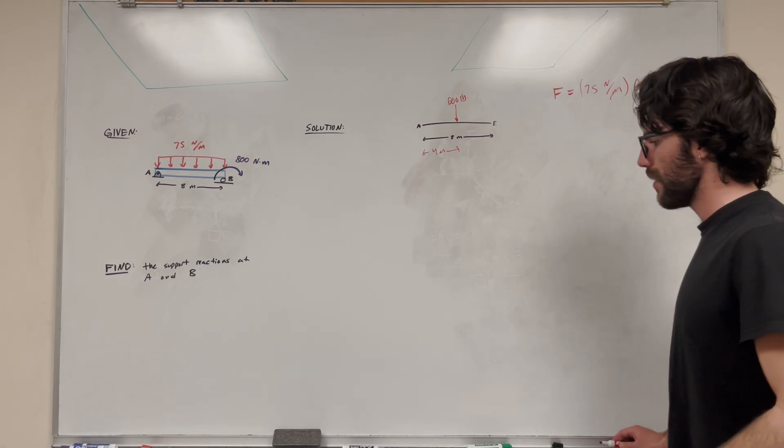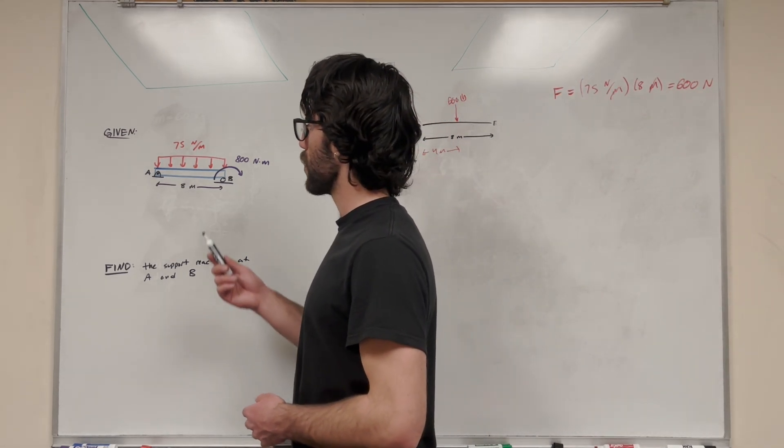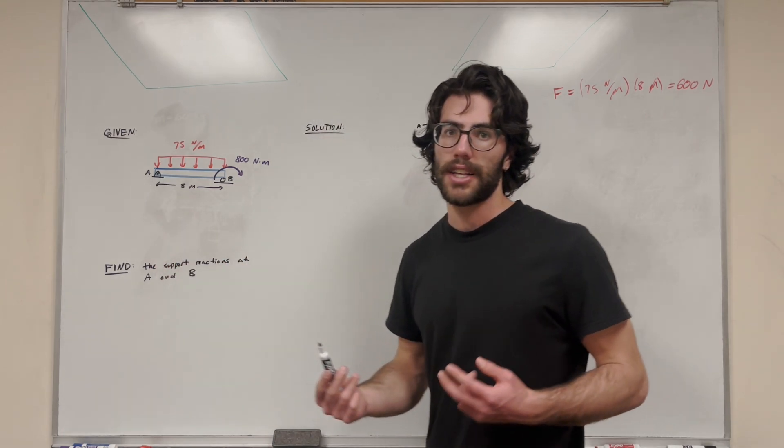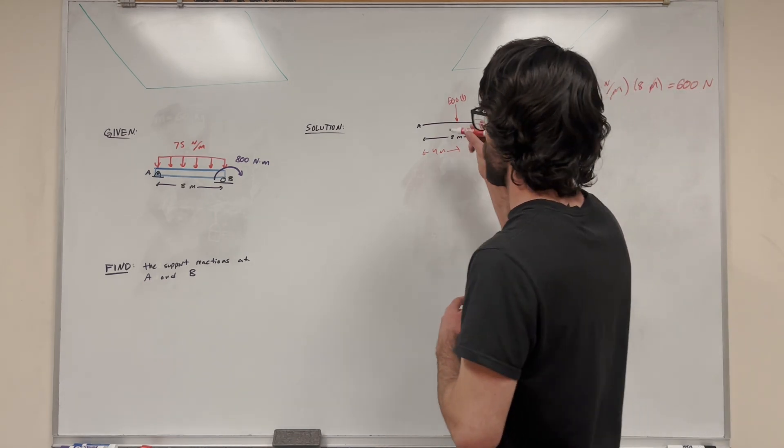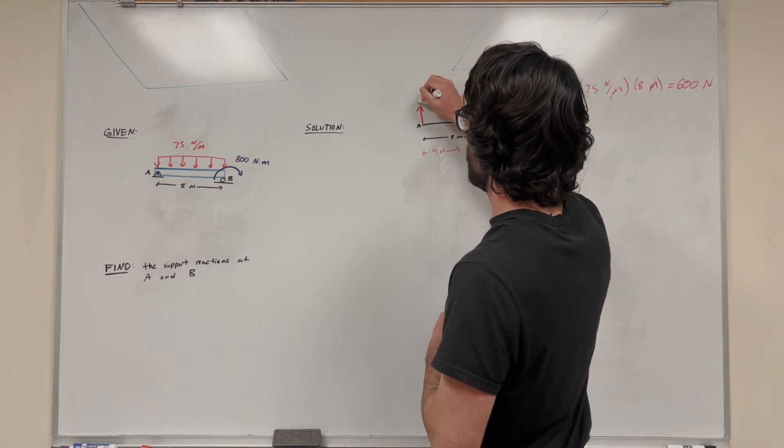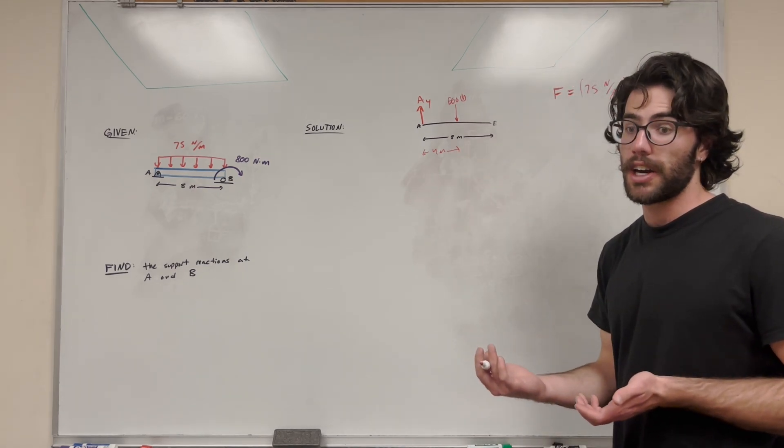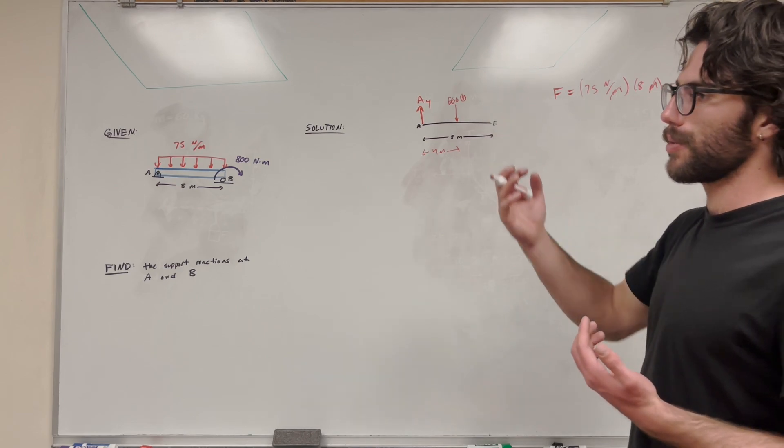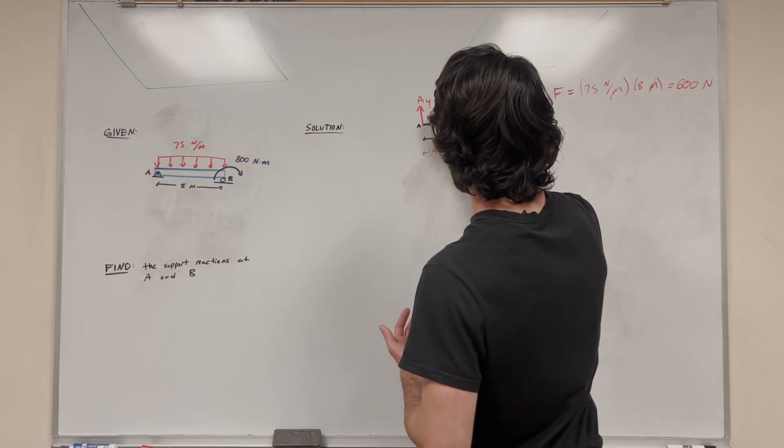So what other forces do we have? Well, we have our support reactions at A and B. So let's go ahead and look at A and B. So if we look at the photo or the drawing here, A is a pin. And a pin has two reactions. A pin has an X and a Y reaction. So it can resist movement in the X and Y direction. So we'll label this A_y. I'm going to label it going upwards, just kind of arbitrarily. You can kind of tell that that is probably going to be holding the beam up. So I'm going to draw it going up because that's my assumption. And then A_x, I'm going to draw it going this direction.